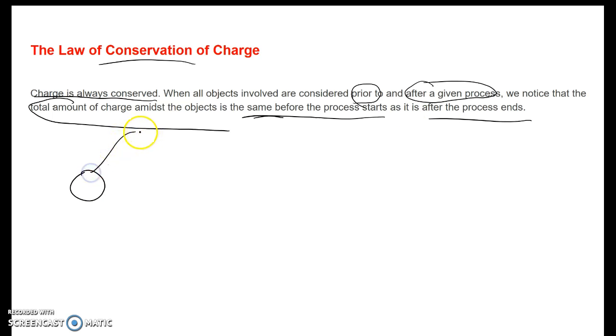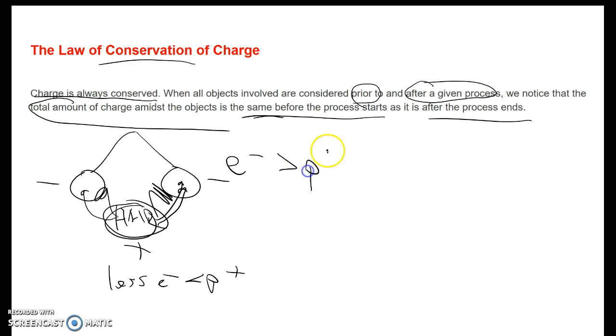For example, you have the balloon situation and the hair. Initially, everybody's neutral. When you rub your head on these balloons, your electrons are jumping over to the balloons. Your hair is not collecting any more electrons. Even though the electrons leave, these become negative and your hair becomes positive because your hair has less electrons than protons.